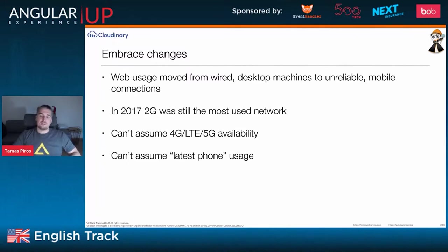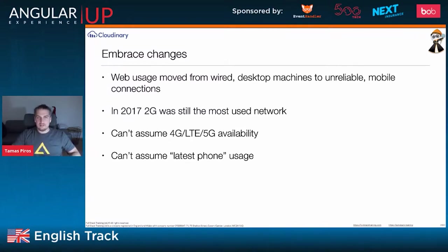Some interesting statistics: as of 2017, 2G was still the most used mobile network globally. That has since changed to 3G, but even in 2017, in the places where I lived, we were on 3G and 4G was just being introduced. The place where you develop your code may not represent the reality of your users.